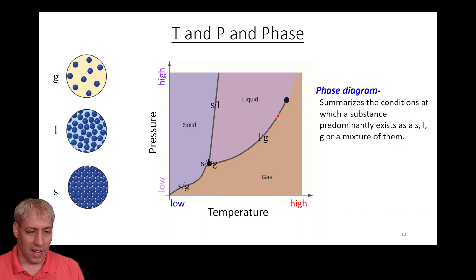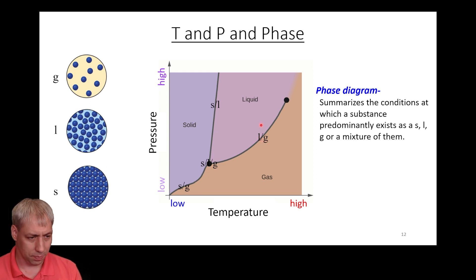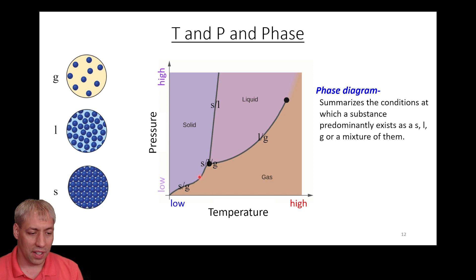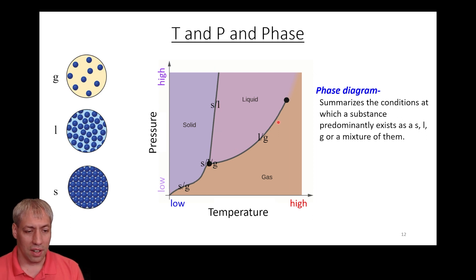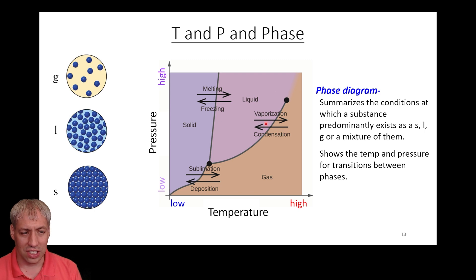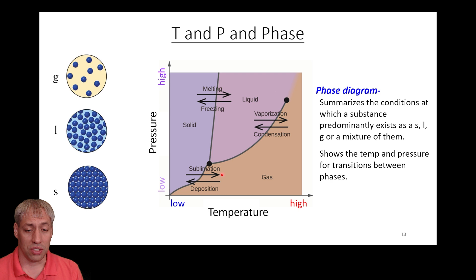Every one of these lines is a phase transition. The line between liquid and gas is the threshold where liquid turns into gas and vice versa. If you decrease the pressure from a liquid region, you cross this line — at the line both phases exist — then it transitions to gas. Similarly, cooling a gas will hit the solid-gas line where both exist in equilibrium, then predominantly solid. Crossing these lines gives you melting/freezing, condensation/vaporization, deposition, and sublimation.